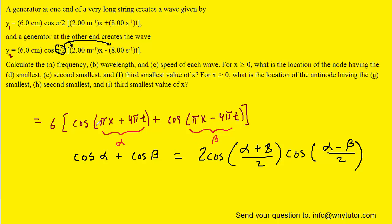Now we'll notice when we add our α to our β, the πx plus πx will become 2πx. The 4πt and the minus 4πt will cancel. So we're going to be left with 2πx for the numerator. But then we see the identity asks us to divide by 2.